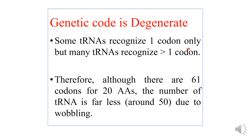Some tRNAs recognize only one codon, but there are many tRNAs that recognize more than one codon. Therefore, although there are 61 codons for 20 amino acids, the number of tRNAs is far less — around 40 to 50 (some books mention 40, others mention 50). This is possible because of the wobbling phenomenon. Wobbling means there is flexibility in the third base pairing and it does not follow Watson and Crick base pairing.